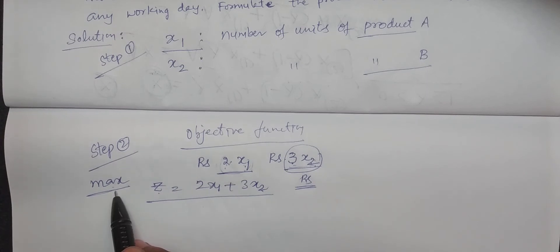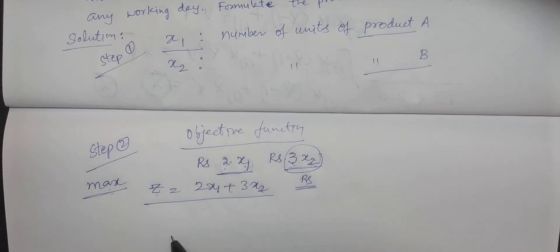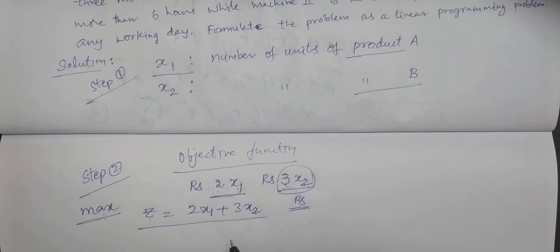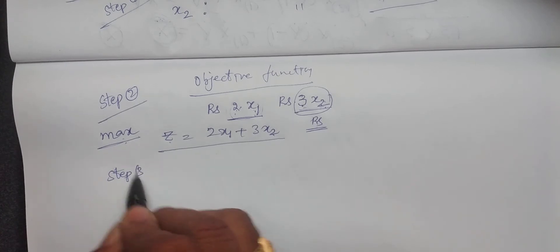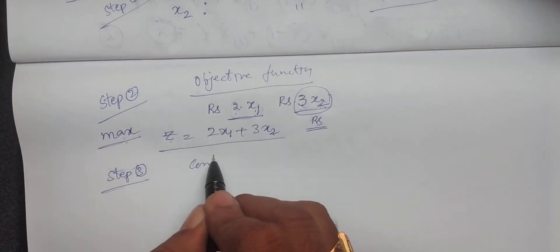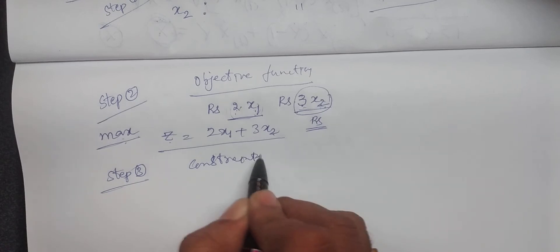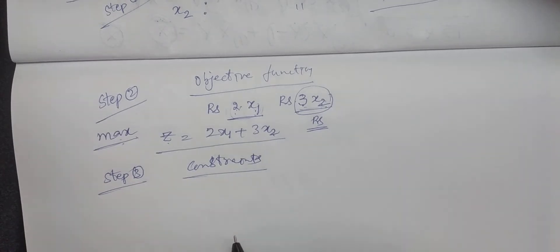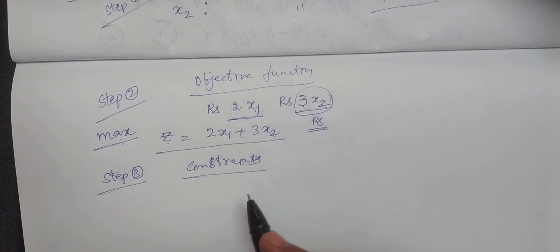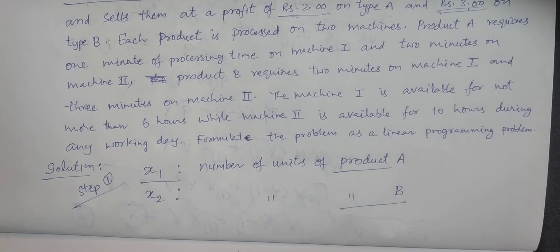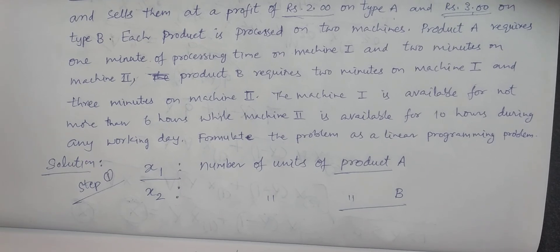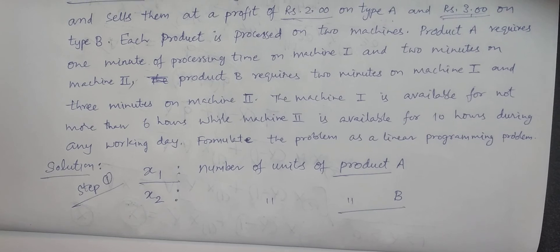Why maximization? Since it is profit, profit is going to be maximized. So step two is: maximize Z = 2X1 + 3X2. Now step three is constraints — we need to construct any interrelationship between the variables which are given.